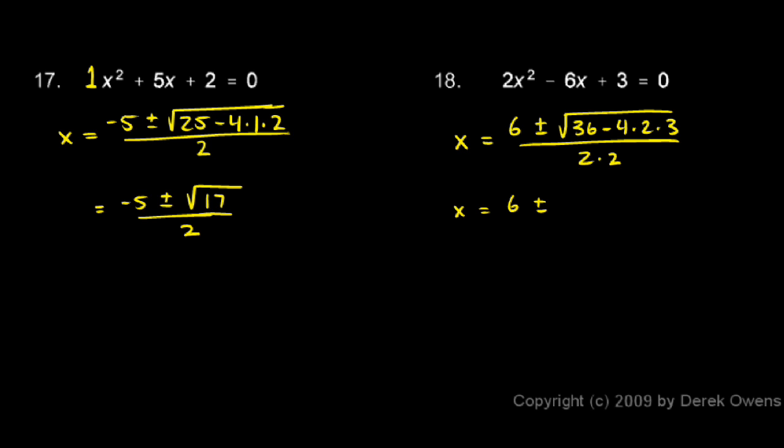So we have 36 minus 24, which leaves us with 12 under the radical. So 6 plus or minus the square root of 12 over 4.